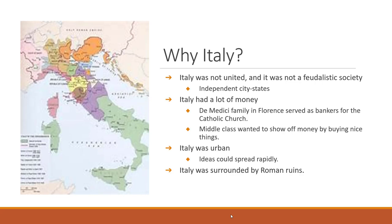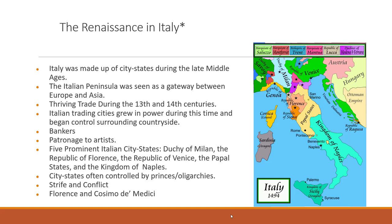Continuing on why the Renaissance is in Italy: Italy was made up of city-states during the late Middle Ages, not a unified nation-state. The Italian peninsula was seen as a gateway between Europe and Asia, giving it a vibrant trade network that thrived in the 13th and 14th centuries. As Italian trading cities grew in power, they began to take control of surrounding countryside—this is how city-states grew and developed.